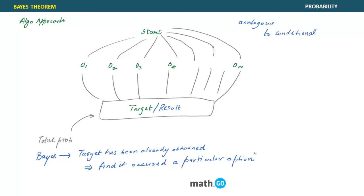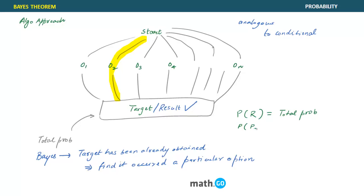Bayes asks: given that the result has already occurred, find the probability it occurred through a particular option or path. So Bayes can be represented as: given that result has occurred, find the probability it occurred through path two. Bayes is asking you to find the probability that the result was obtained when you used a specific option.